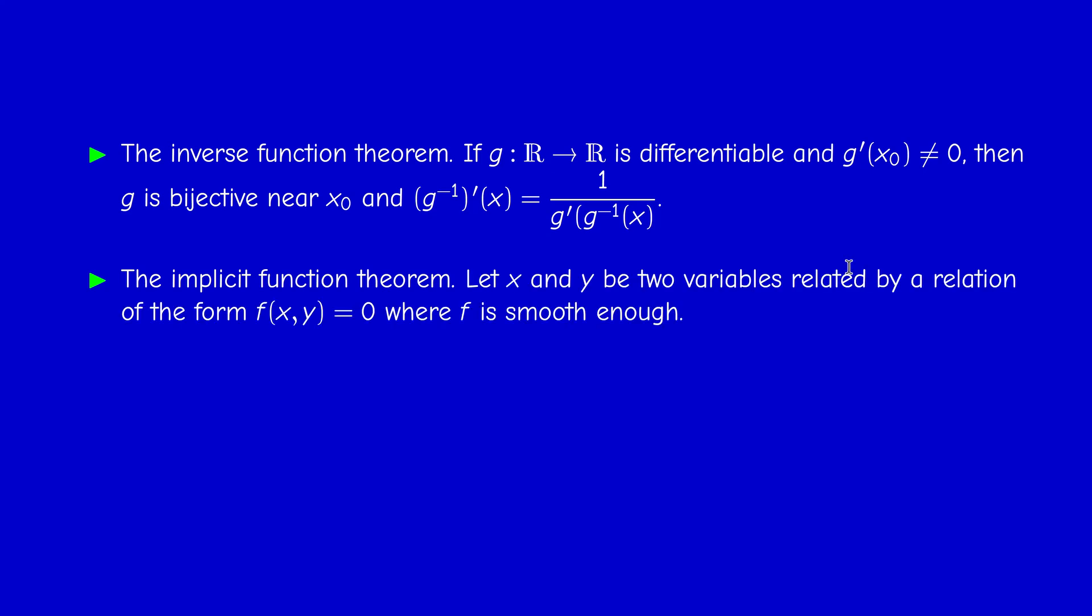If we have two real variables, X and Y, related by a relation of this form, F of X, Y equals 0. For example, X squared plus Y squared minus 1 equals 0, or X squared minus plus Y cubed equals 0, or something. So, the problem is, can we solve Y in terms of X, or X in terms of Y, at least locally?